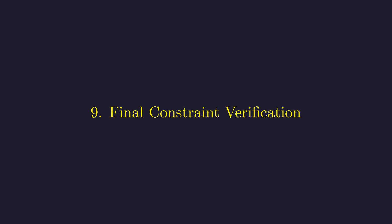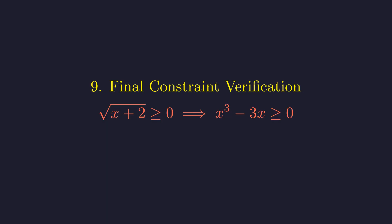But we're not done yet. There's one more constraint we need to check. The right side of our original equation is a square root, which means it's always non-negative. So the left side, x cubed minus 3x, must also be non-negative. In terms of theta, this means cosine of 3 theta must be non-negative. Let's check each of our candidates.